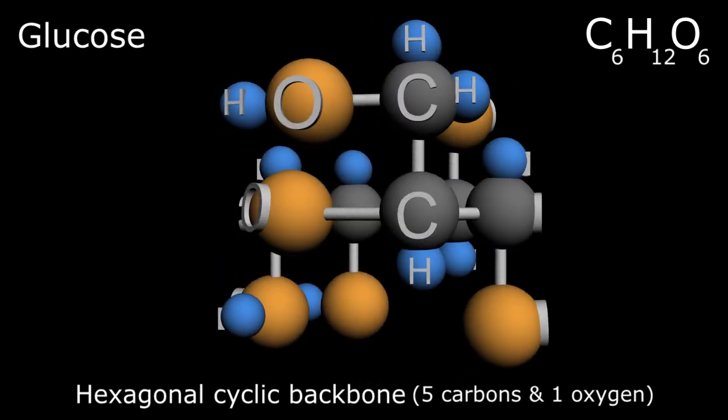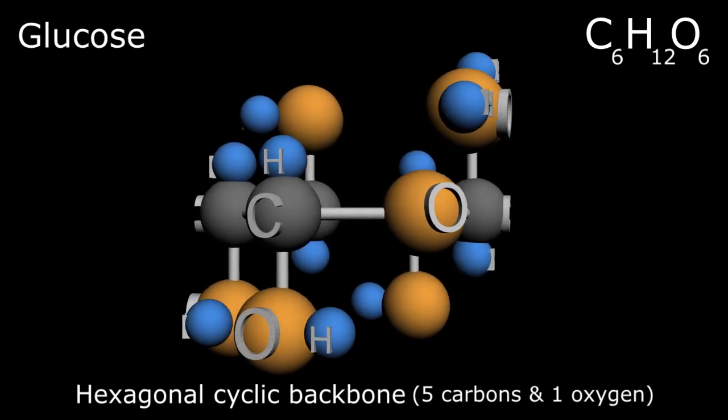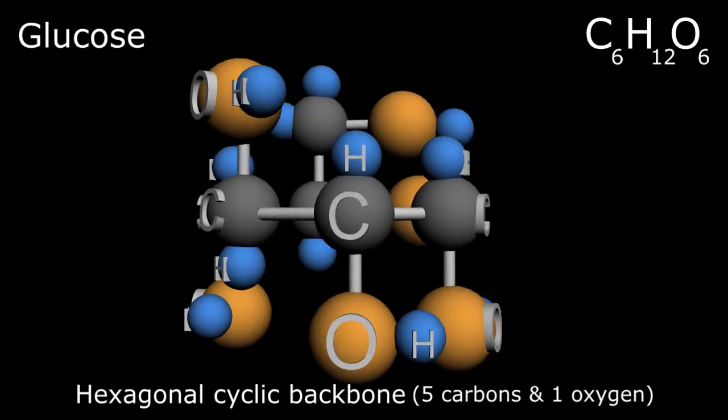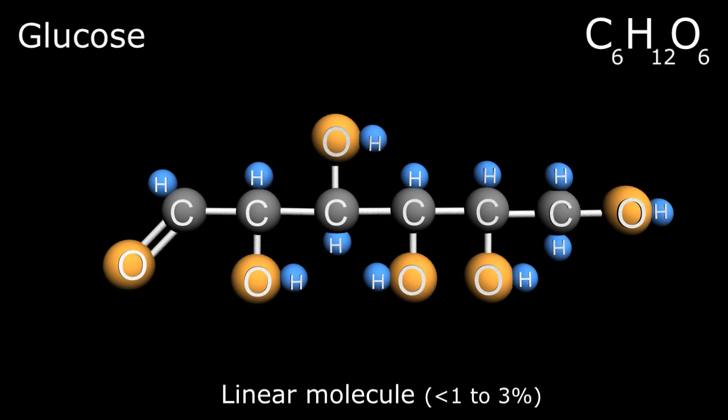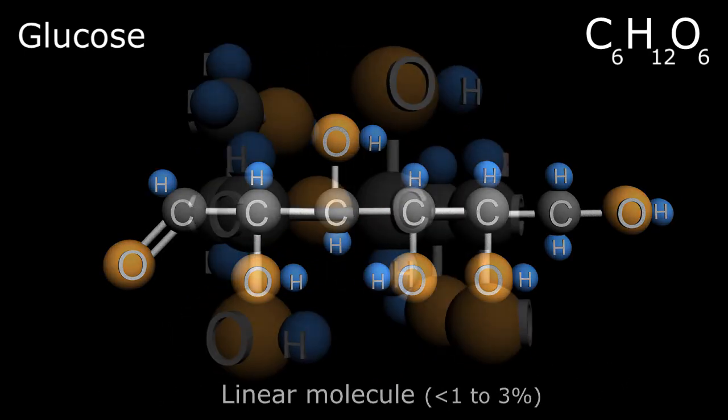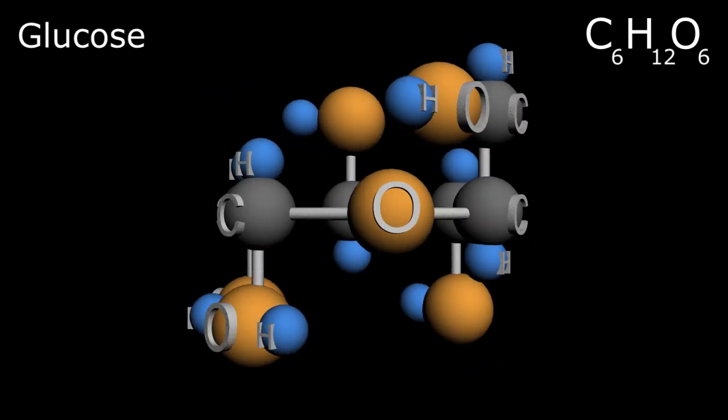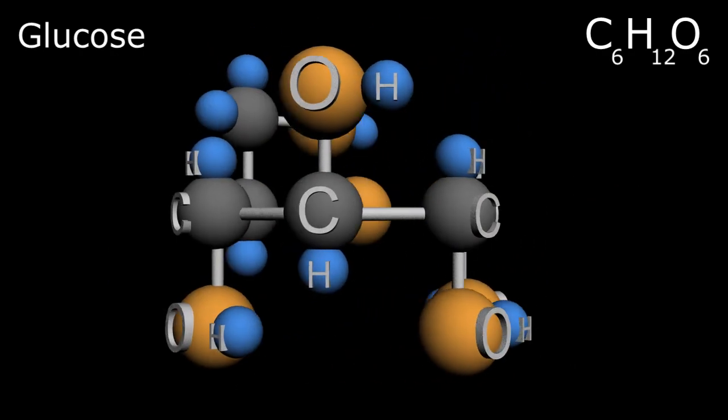However, a small percentage of glucose, from less than 1 to 3 percent depending on the local environment, can also exist in a linear form, and we're going to spend the next few minutes graphically demonstrating how the molecule changes its configuration from one form to the other. But first, let's review some basic chemistry.